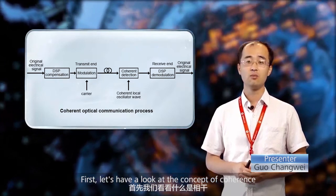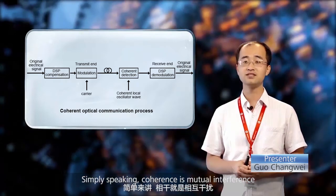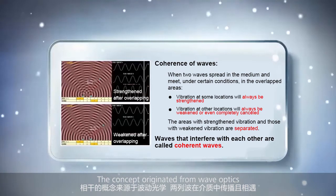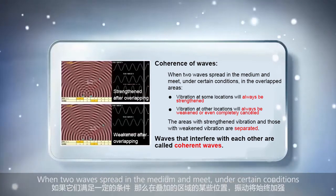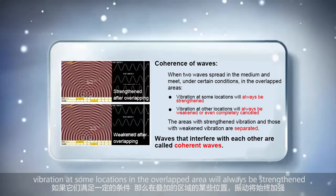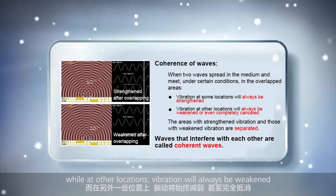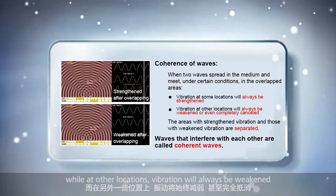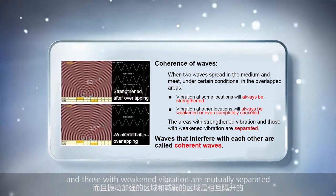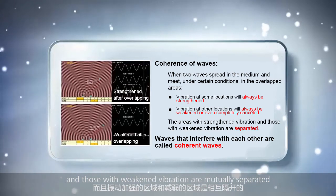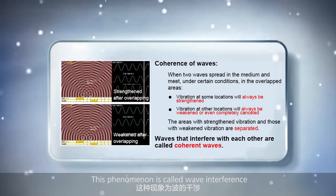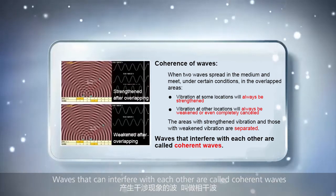First, let's have a look at the concept of coherence. Simply speaking, coherence is mutual interference. The concept originated from wave optics. When two waves spread in a medium and meet, under certain conditions, vibration at some locations in the overlapped area will always be strengthened, while at other locations, vibration will always be weakened or even completely cancelled. The areas with strengthened and weakened vibration are mutually separated. This phenomenon is called wave interference.